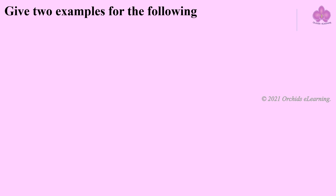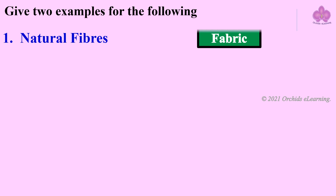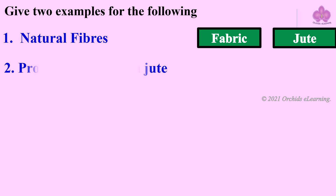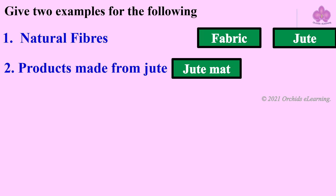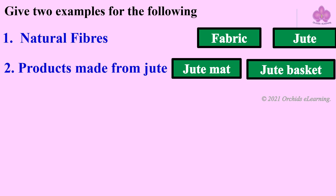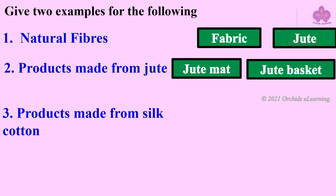Give two examples for the following. Natural fibers: cotton, jute. Products made from jute: jute mat, jute basket. Products made from silk cotton: soft toy, cushion.